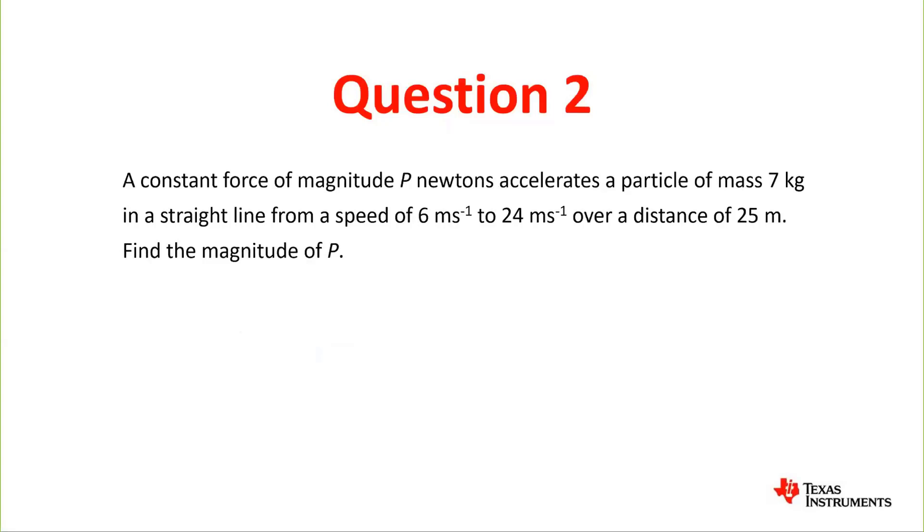Again, we should draw some sort of diagram. We see we have our particle with the normal reaction and the 7g, and we have p the constant force. We then have to look at what we've got out of the question. So we list out our variables: the final velocity is 24, the initial velocity is 6, t we don't need to worry about, the acceleration is what we have to work out, and the distance traveled by the particle is 25 meters.